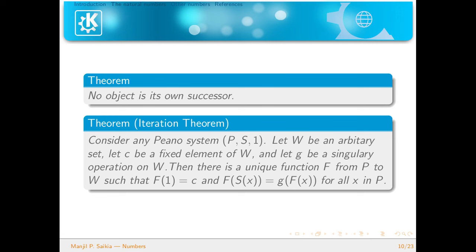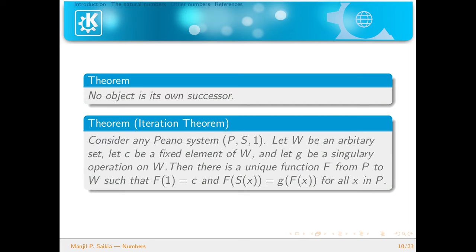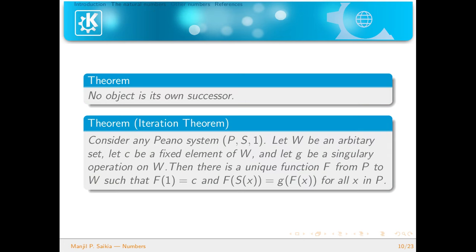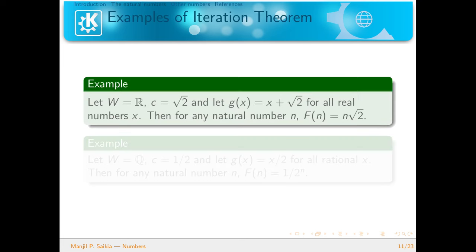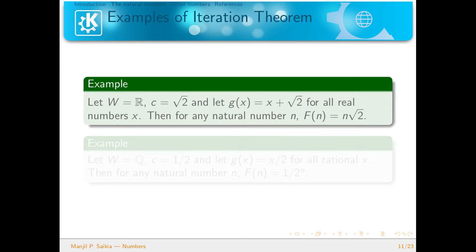Then there is a unique function F from P to W such that F(1) = C and F(S(x)) = G(F(x)) for all x in P. This theorem is very important for what follows. For example, if we consider W to be the set of real numbers, C to be √2, and G(x) = x + √2 for all real x, then for any natural number n, F(n) = n√2. We substitute W = ℝ and G(x) = x + √2, and iterating we verify F(1) = √2 and F(S(x)) = G(F(x)) = F(x) + √2. That is why this is called the iteration theorem.